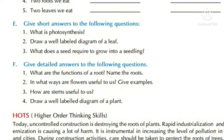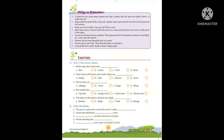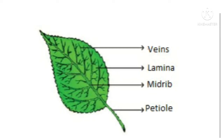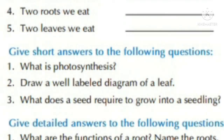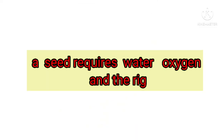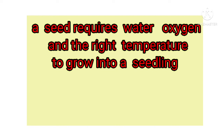Question two: draw a well-labeled diagram of a leaf. A leaf has main parts: petiole, midrib, lamina, and veins. Question three: what does a seed require to grow into a seedling? A seed requires water, oxygen, and the right temperature to grow into a seedling.